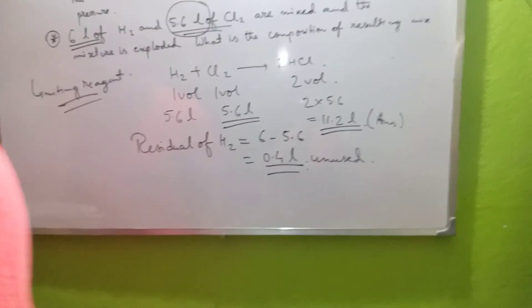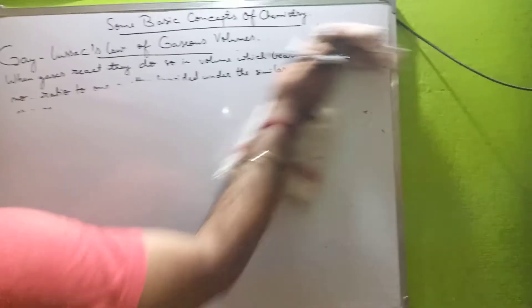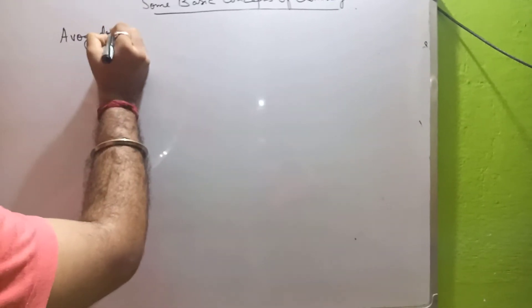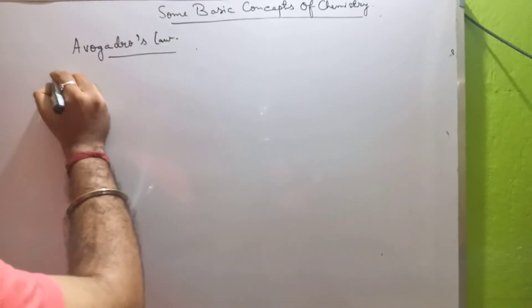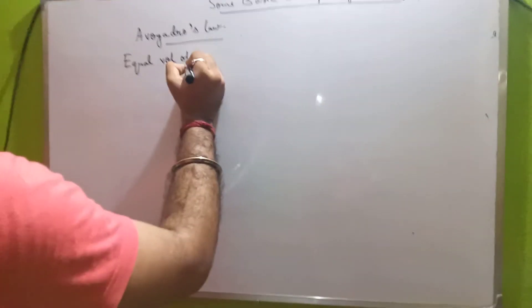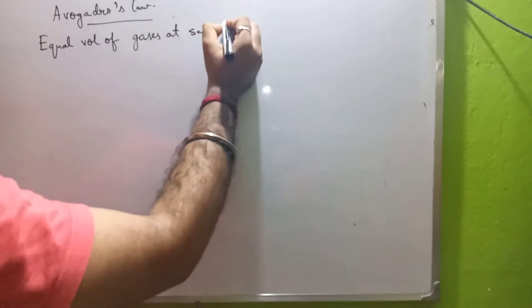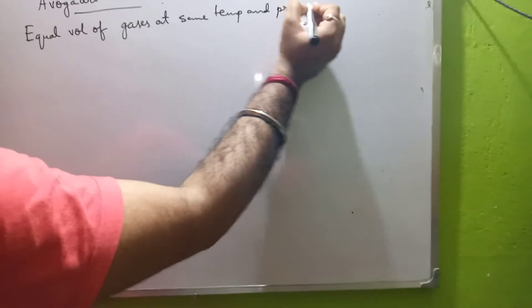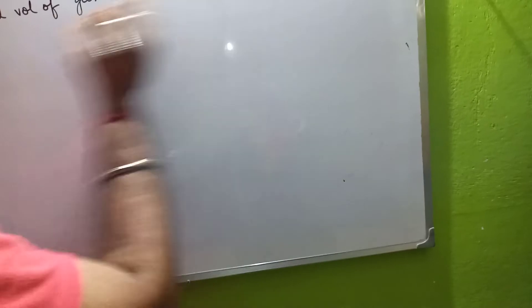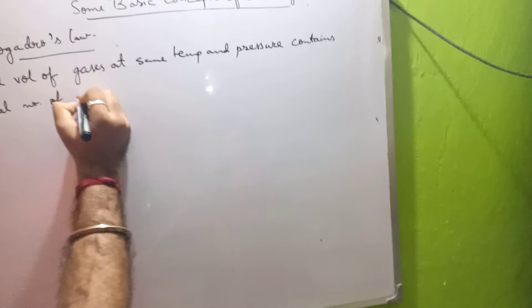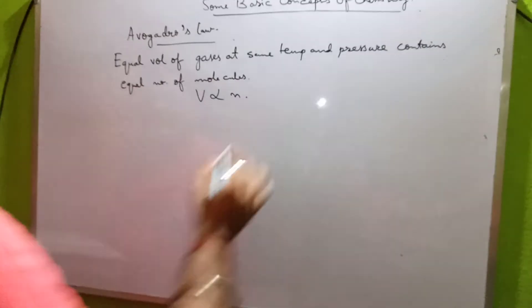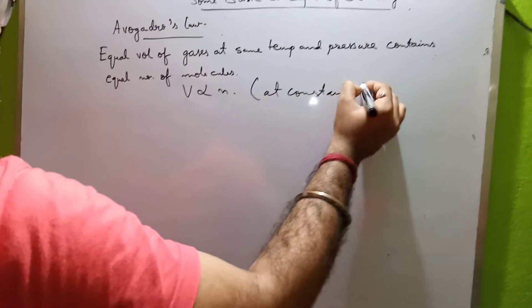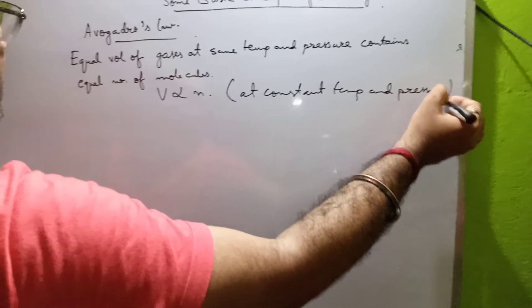The next topic is Avogadro's law. Avogadro's law states that equal volumes of gases at the same temperature and pressure contain the same number of molecules. Volume is directly proportional to n (number of moles) at constant temperature and pressure — so more the volume, more will be the number of moles.